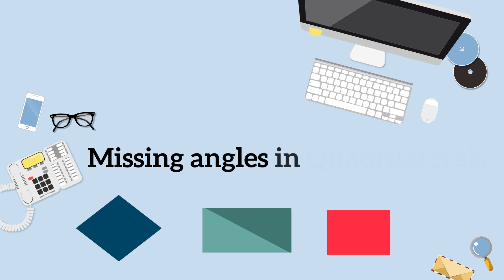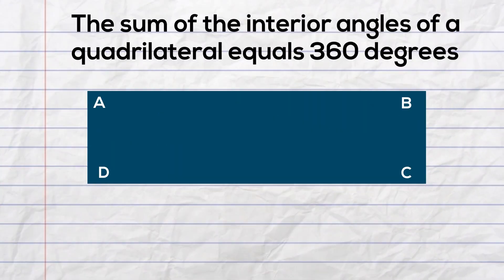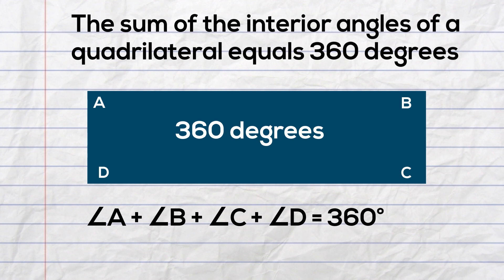In this video I'd like to go over how to find missing angles in quadrilaterals. The first piece of information that you'll need is that the sum of the interior angles of a quadrilateral equals 360 degrees. So when you add angle A plus angle B plus angle C plus angle D, that equals 360 degrees. You can use this to find missing angles.